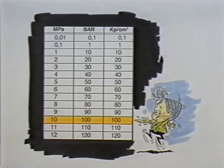Pressure is usually measured in MPa, megapascal. However, older units of measurement, such as bar and KGP per square centimeter are still in common use.